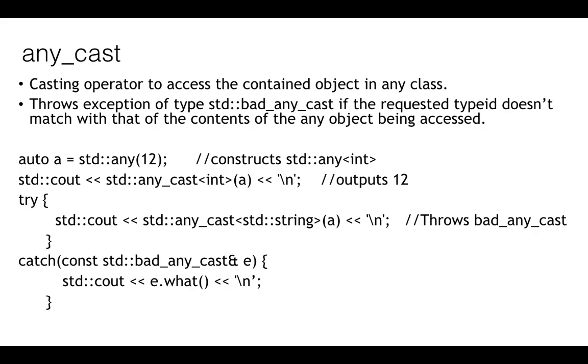In the first step, an any object is constructed which holds value 12. If we type cast to int, then the type cast is successful and you will get the content value 12. But if you type cast it to string, there will be a bad_any_cast exception which you can catch.